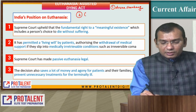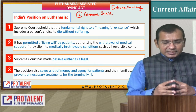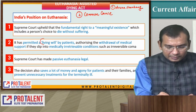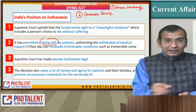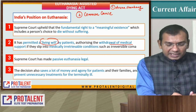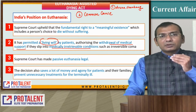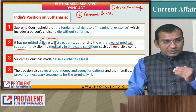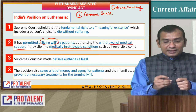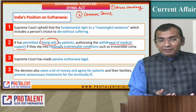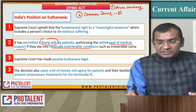The second case was Common Cause versus Union of India — that NGO's famous case. In this case, the Supreme Court permitted a living will by the patient. The patients can develop a living will when they are in their senses, authorizing withdrawal of medical support if they slip into medically irretrievable conditions. When they are in an irreversible coma, it is really possible for medical science to do nothing else. At that situation, the consent of the patient is needed, and when they cannot provide such consent, the concept of a living will was established.